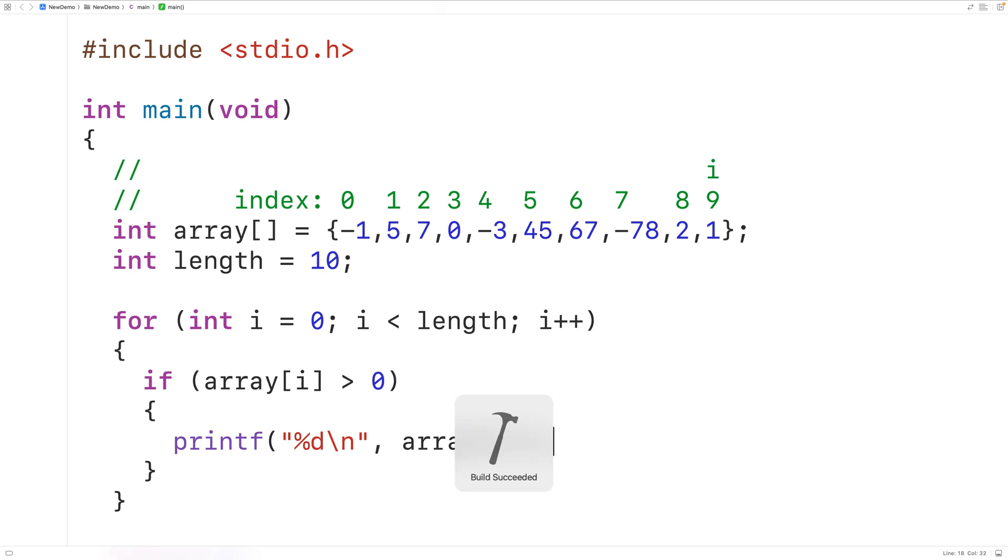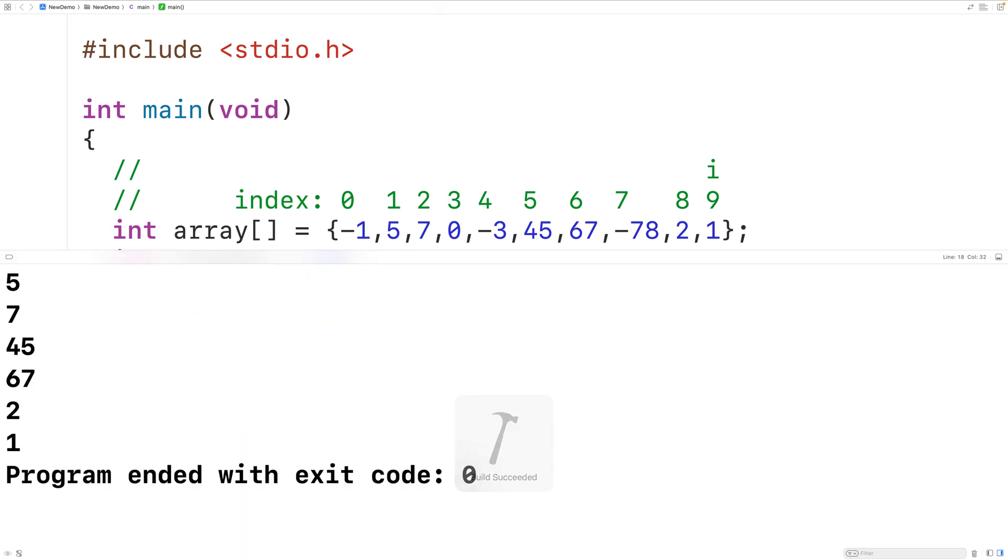So then if we save compile and run the program we'll get here only the positive integers in the array as output. And what's happening is the loop is examining each array element and only if that array element is a positive integer do we print it out. So we don't print out negative 3 here or 0 but we do print out 45 here.